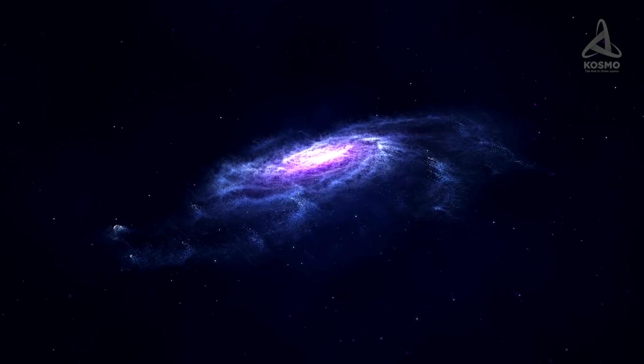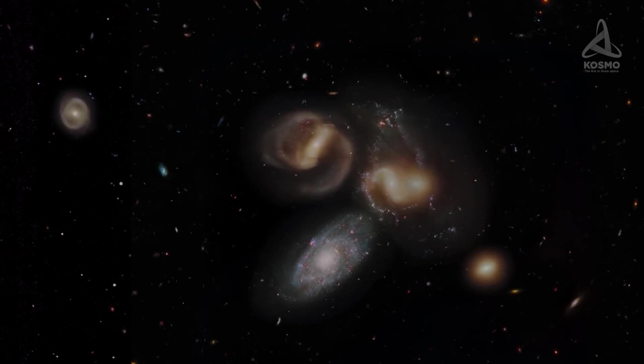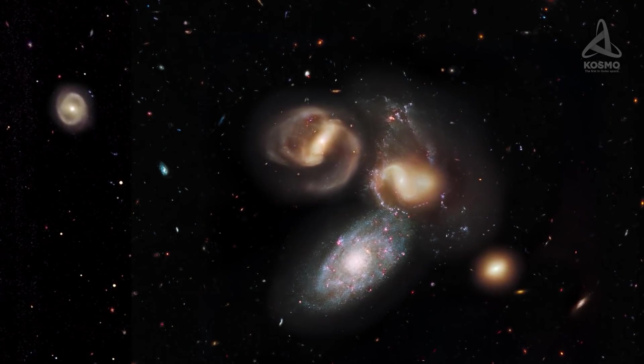The second class is spiral galaxies, which are peculiar for the central bulge cocooned in a disk. And the third class is irregular galaxies, typically unsuited to either of the proposed categories.